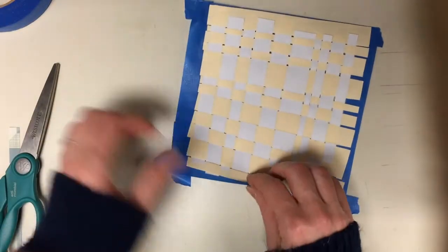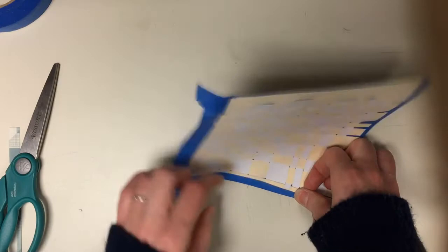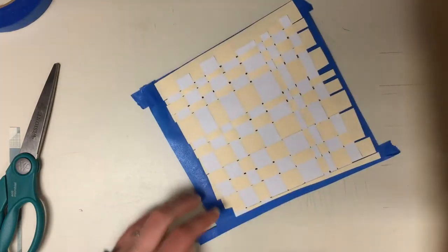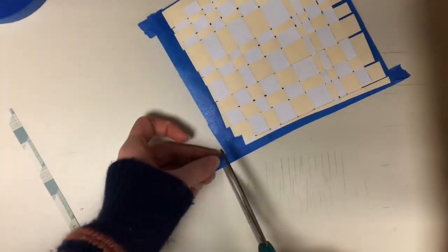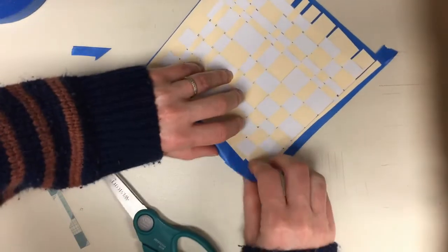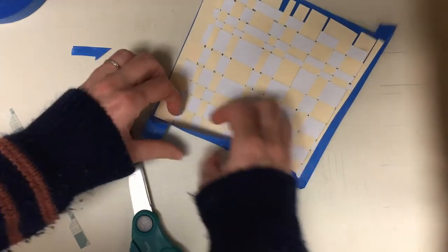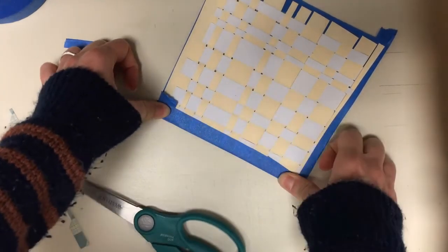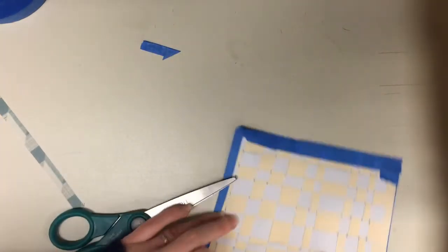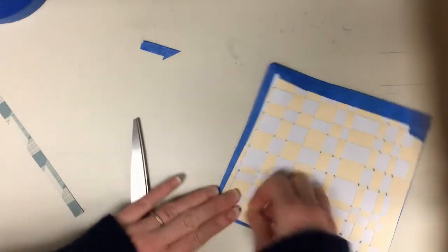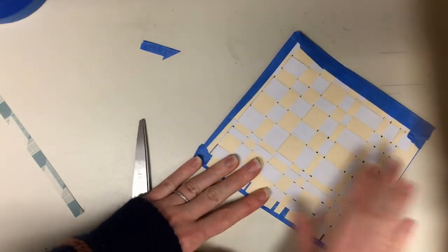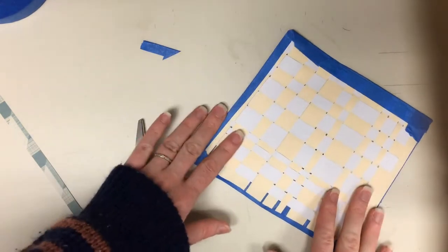I'm going to flip it over and fold this excess tape back. This helps secure all of your pieces where they are supposed to be. If I have some extra tape hanging out here, I can cut that off. I can fold this down and fold this over.